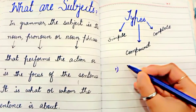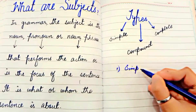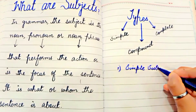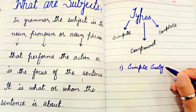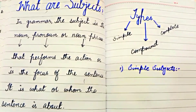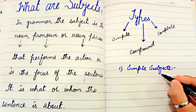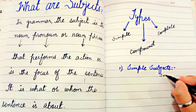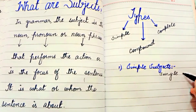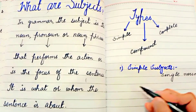Number one: simple subjects. What are simple subjects? It refers to a single noun or pronoun, sometimes preceded by a definite or indefinite article, that functions as the subject of the sentence.